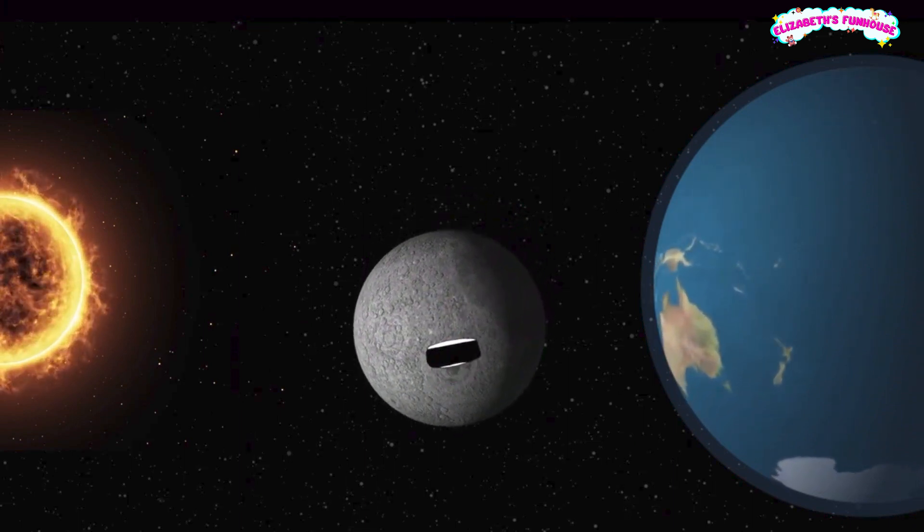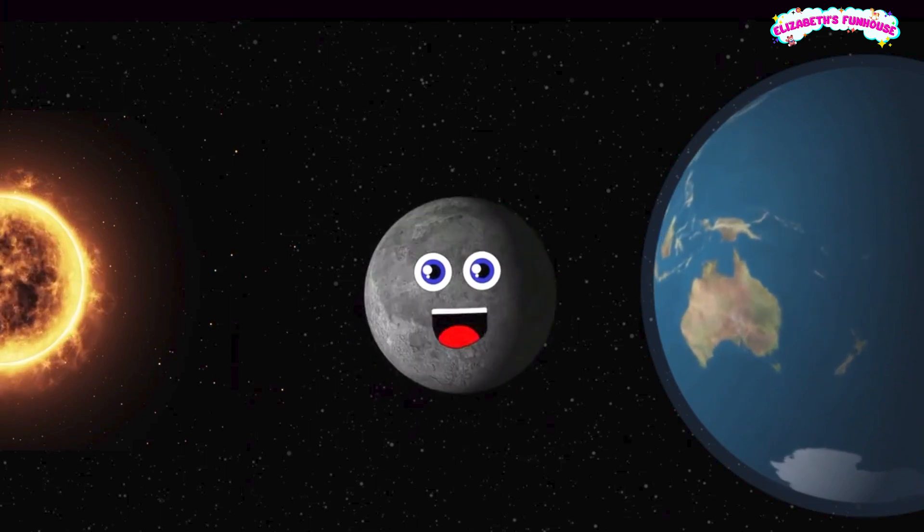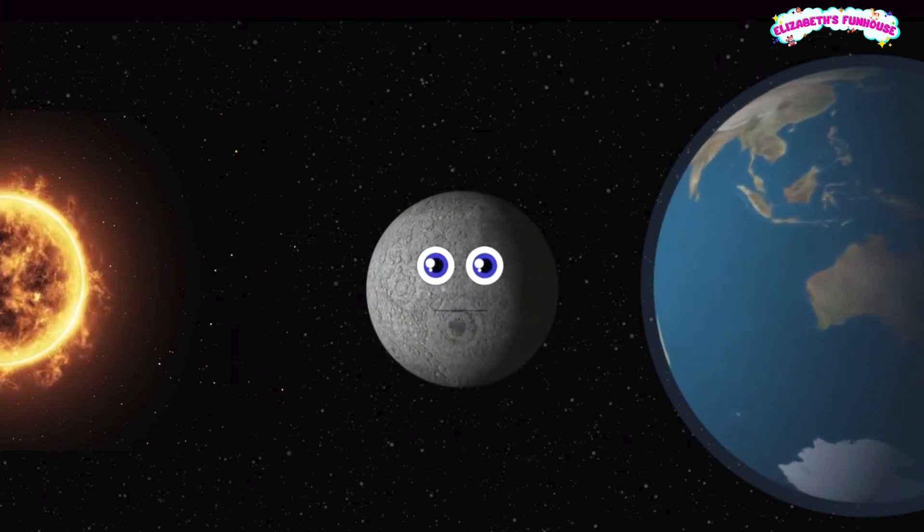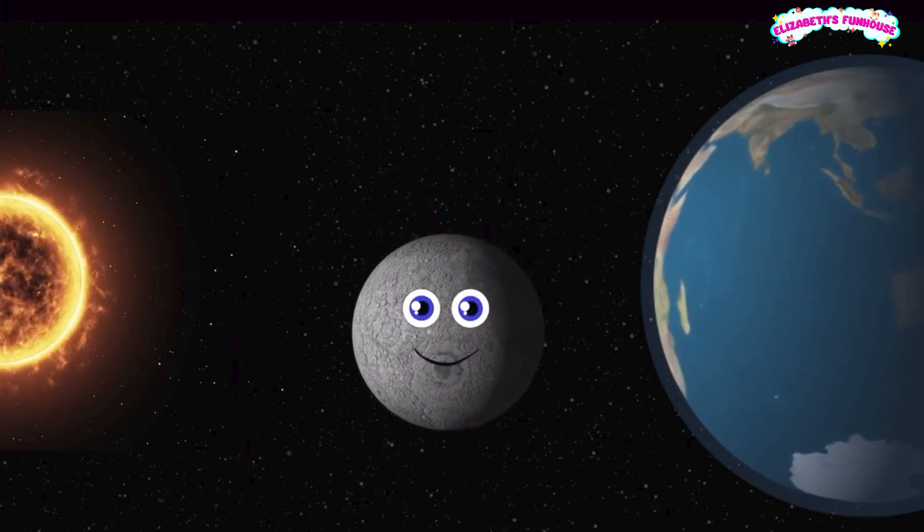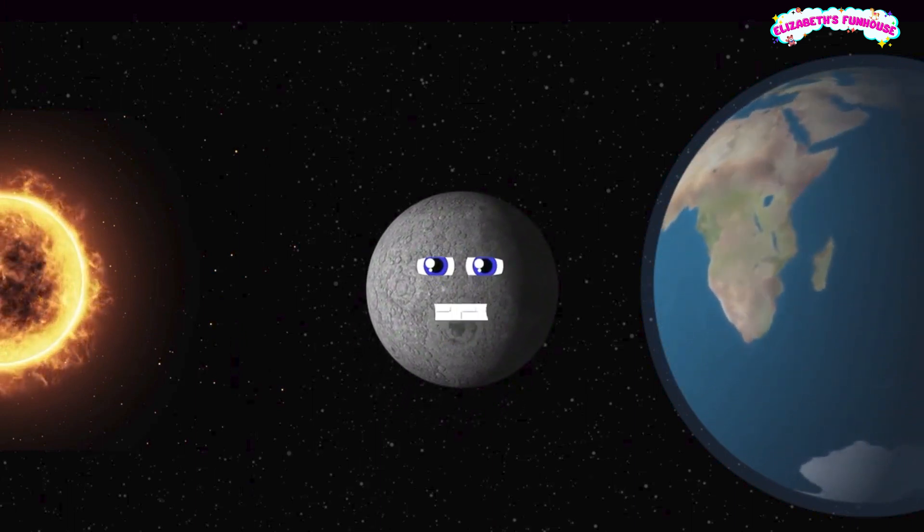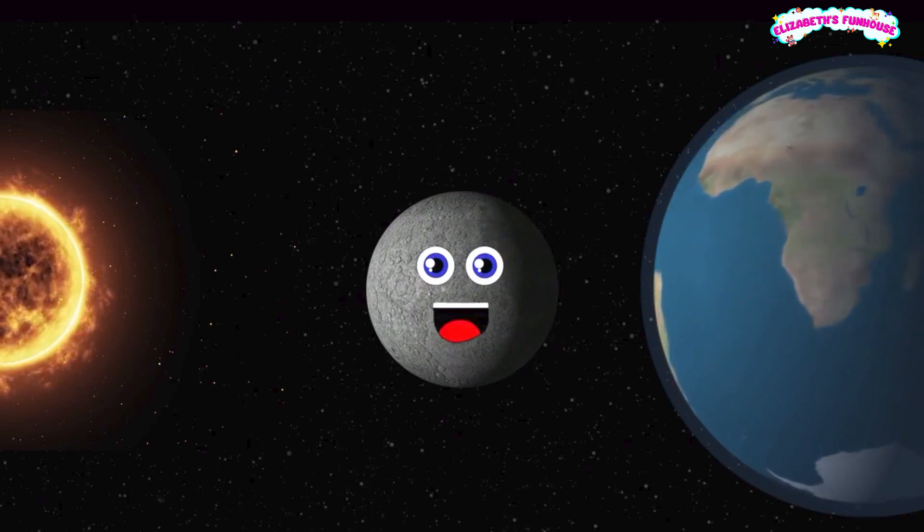I'm the moon, Earth's natural satellite. I rotate the same speed as the Earth and I'm a natural source of light. I'm the moon, my appearance is gray and white. You only see one half of my surface, whether it's day or night.